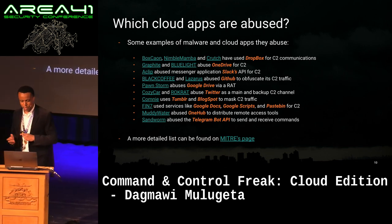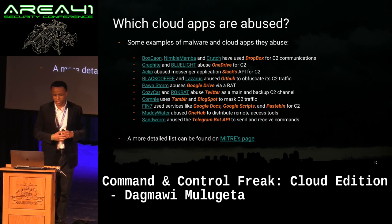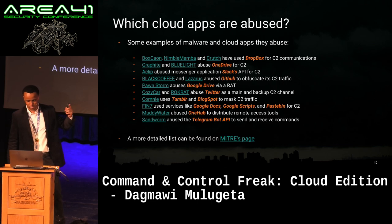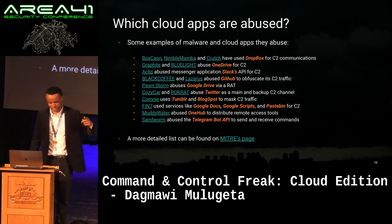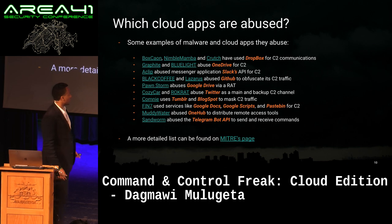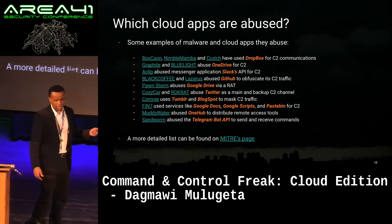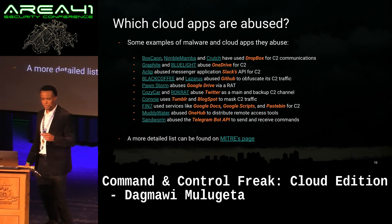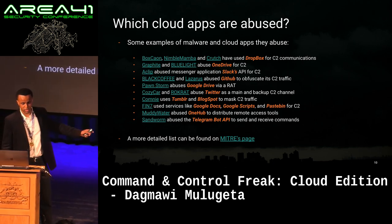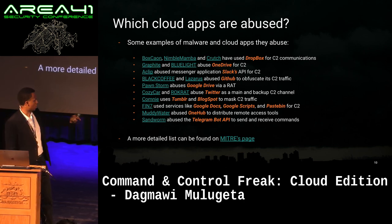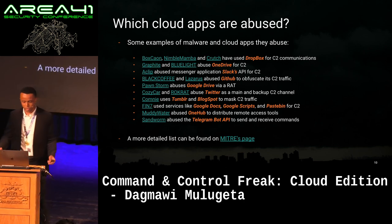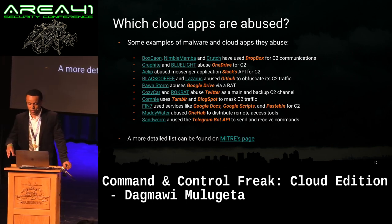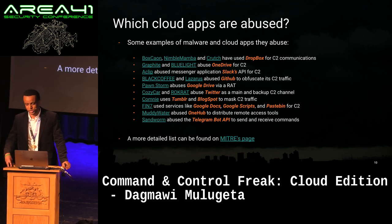You can see BoxCon, NimbleMamba, and Crutch have abused Dropbox. Graphite and BlueLight have abused OneDrive. There's been Slack abuse, GitHub abuse, Google Drive, Twitter, Tumblr, Boxplot, Google Docs — the list goes on. What we really want to show is there's a lot of variety here. Attackers are using a lot of these apps to send their commands back and forth, and this is just a small select list — there's a much more detailed list on MITRE's page. There's no cloud app that's immune to this; attackers have abused it or they're going to abuse it in the future.